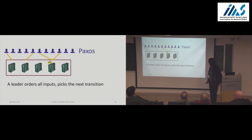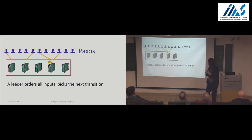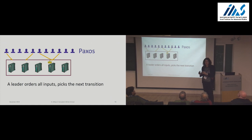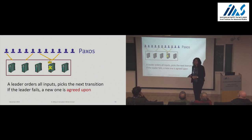Then comes Paxos. The line between repeated consensus and Paxos is often blurred, but here's a nice way to think about it. Paxos is actually a leader-based algorithm — it starts, in some sense, from the primary copy approach to replication. There's a leader which orders all the inputs and picks the next transition to execute, just as in the primary idea. But as I said, the leader might fail. When the leader fails, we elect another leader and transition the work to this other leader. Picking the next leader is done by agreeing on the next leader — we move the throne to another process.